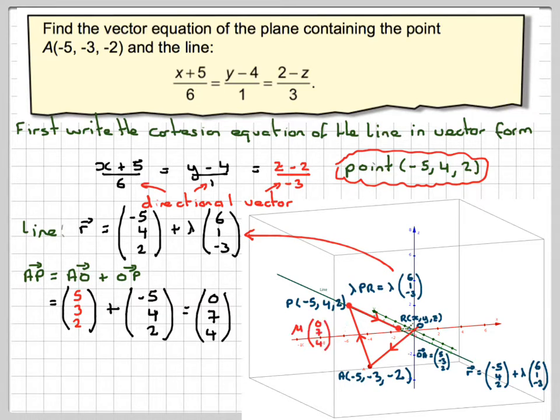So I now know that this vector here is a multiple of mu 0, 7, 4.